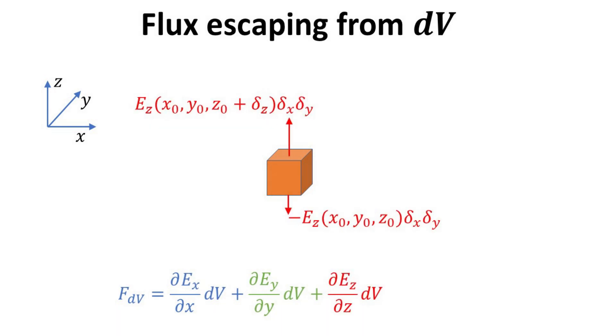Finally, we have the contributions from the surfaces pointing along plus minus z. Here, it is the Ez component of the electric field that is contributing to the flux. The sum of these two fluxes is the finite difference approximation to the differential of Ez with respect to z multiplied by the volume.